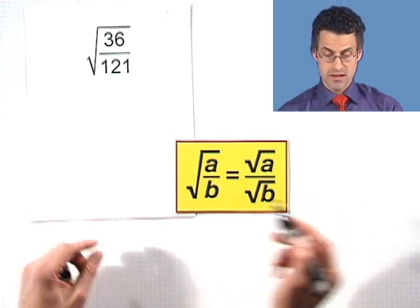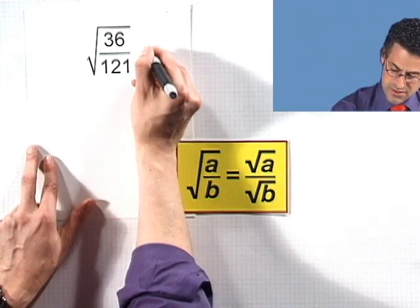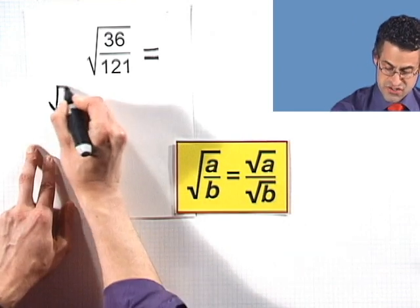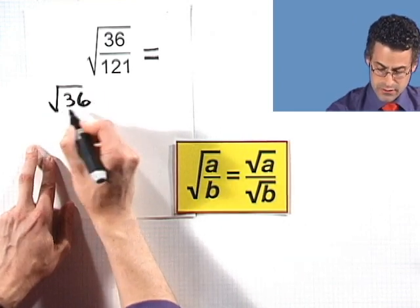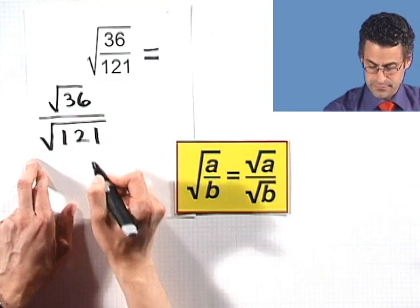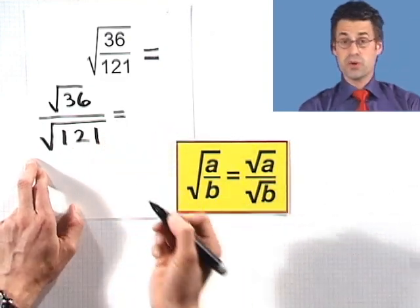So if I take this value here, which looks really threatening to me, I can break it up using this property as square root of the top divided by square root of the bottom. But hey, the square root of the top, I can actually figure that out.